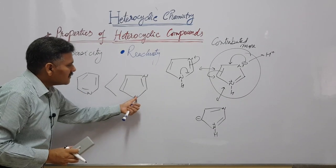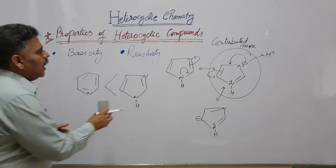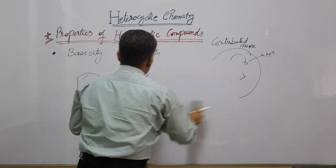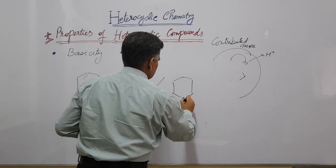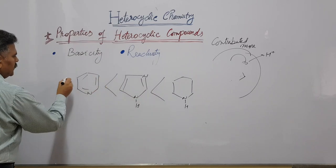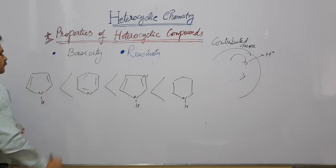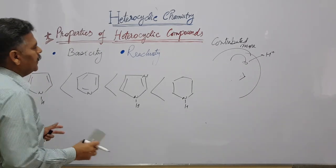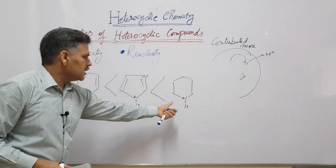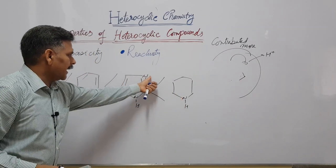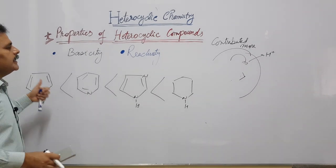Imidazole is more basic than pyridine because one nitrogen facilitates the electron donation of the other nitrogen. The overall basicity order is: piperidine > imidazole > pyridine > pyrrole. The factors involved are: sp3 hybridization for piperidine, pyridine-like nitrogen assistance in imidazole, availability of lone pair with sp2 nitrogen in pyridine, and highly non-basic pyrrole because the lone pair is involved in resonance.